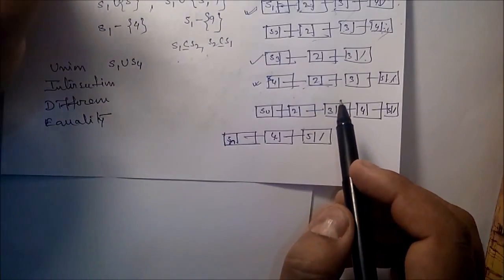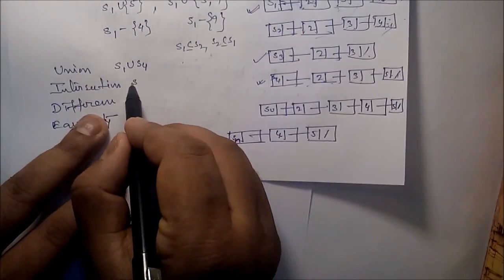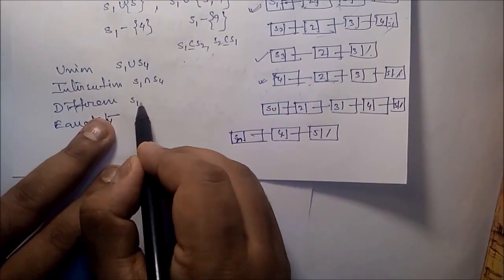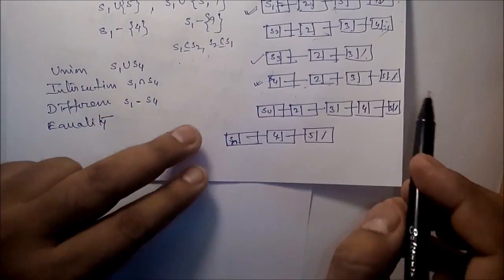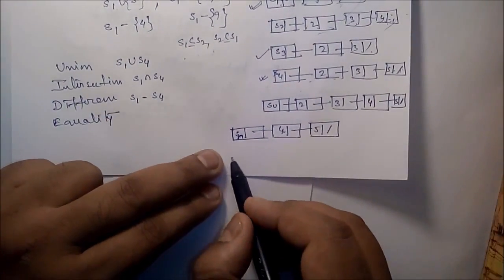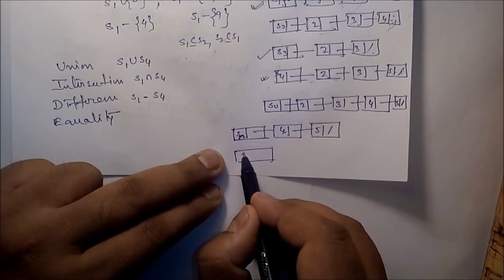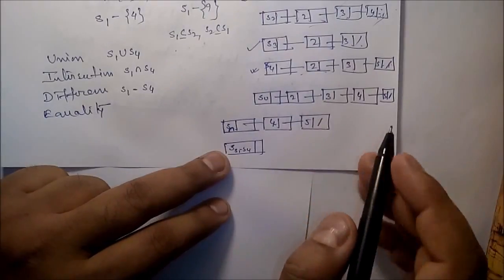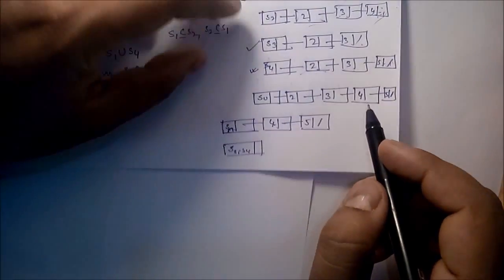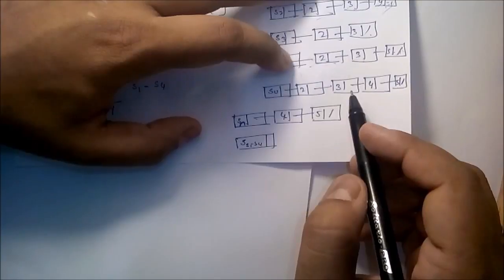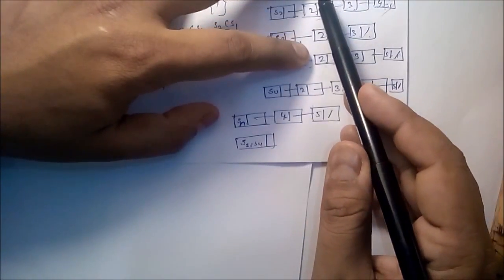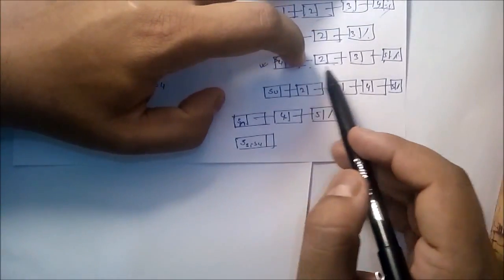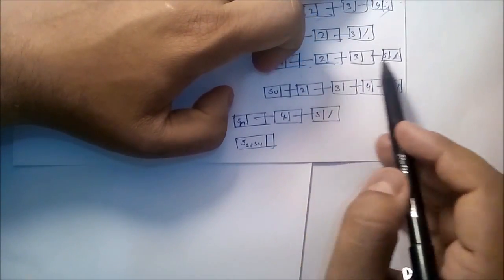For difference, s1 minus s4 — you check each element: two is there, three is there, four is there or not. This gives you the elements in s1 that are not in s4. That is the difference operation.